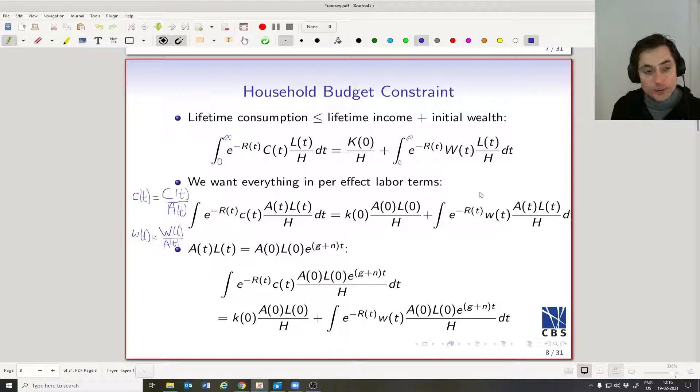All right. We know one more thing. We have assumed that A_t and L_t are growing at an exogenous rate. The exogenous rate is g for A_t and n for L_t.